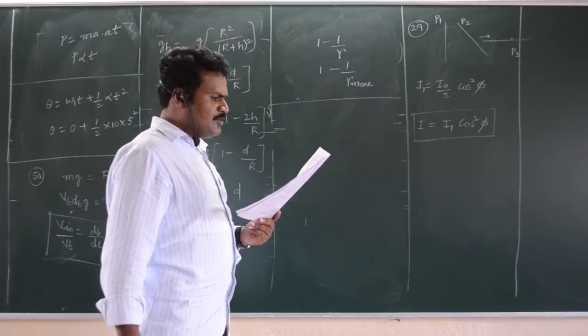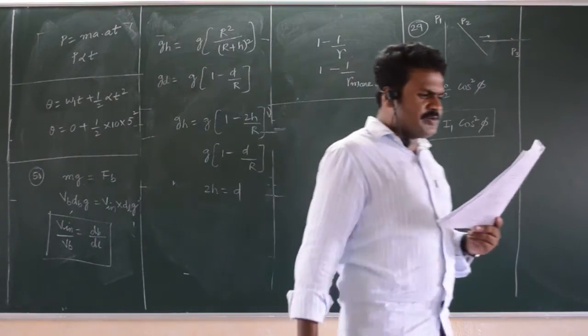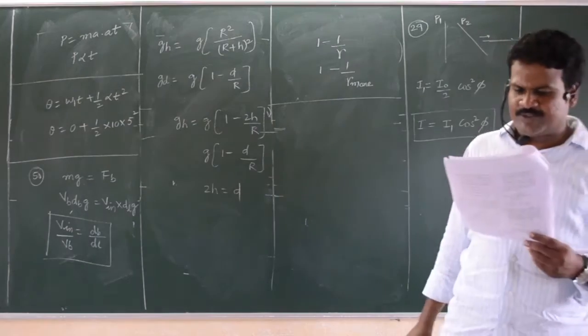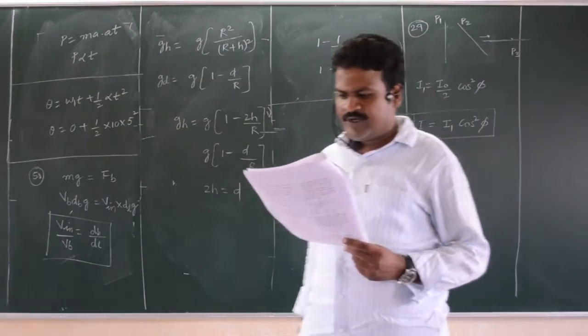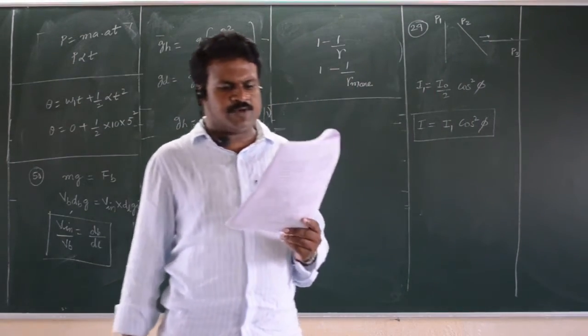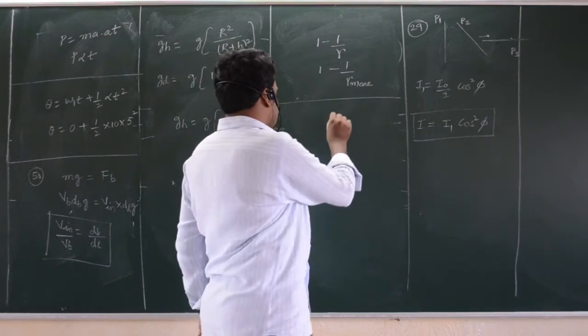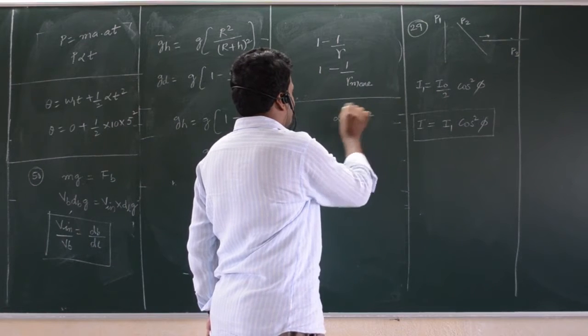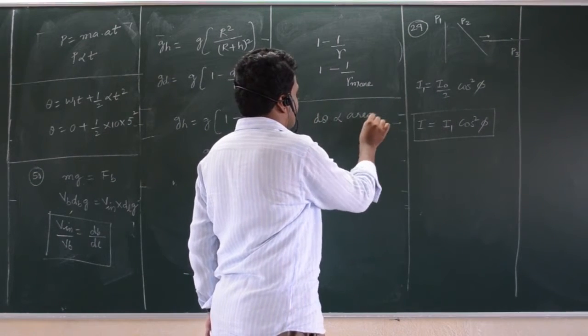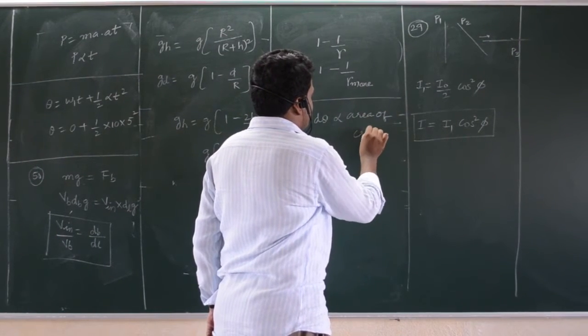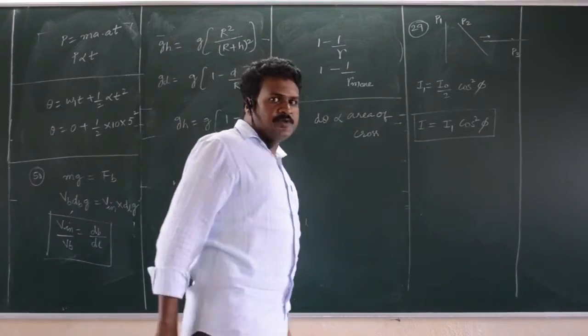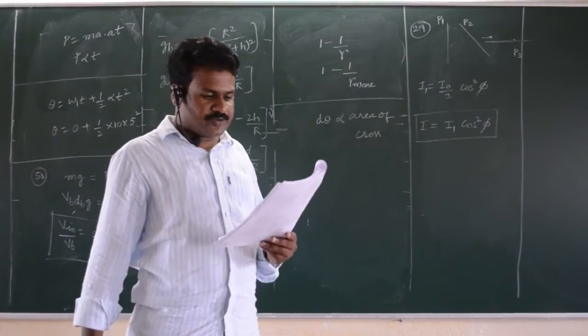Next, a sphere, cube and a thin circular plate all of same material and same mass initially heated to same high temperature are allowed to cool down under similar condition. Plate will cool fast, sphere will cool slow because heat flow is directly proportional to area of cross section. So, if area of cross section is more, for a given volume, sphere will have less area of cross section.